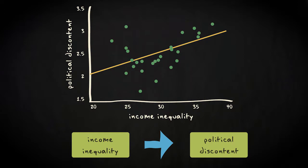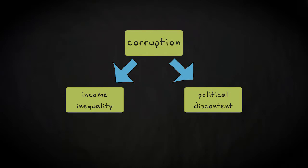However, something else might be going on. It might well be the case that the degree of corruption in a country predicts both income inequality and political satisfaction.